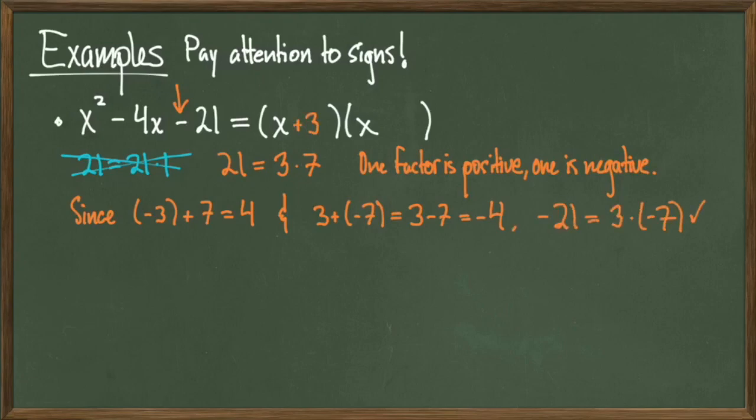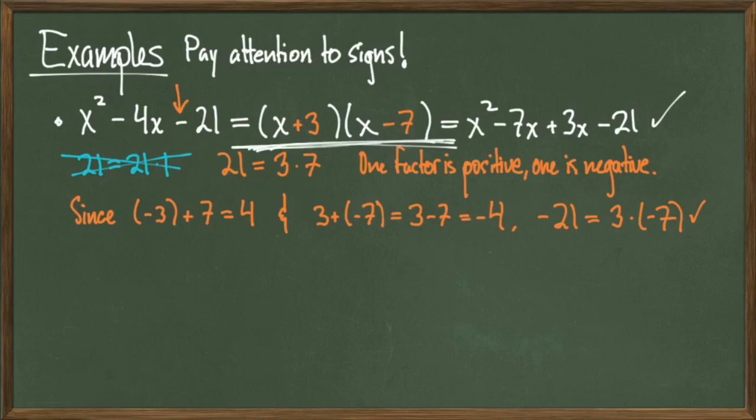Once I place this information in my quantities above and FOIL out, I get the polynomial x squared minus 7x plus 3x minus 21, which will simplify to x squared minus 4x minus 21. Therefore, the correct factorization of this polynomial is x plus 3 times x minus 7.